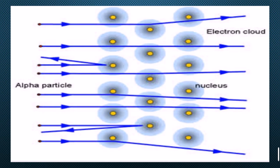The result was that some of the alpha particles passed straight through without any deflection, producing fluorescence on the zinc sulfide screen behind the experimental structure. Here is a two-dimensional structure, and in three dimensions there would be a screen or plate to check the results when alpha particles were bombarded. Three major conclusions were considered.